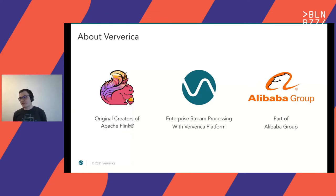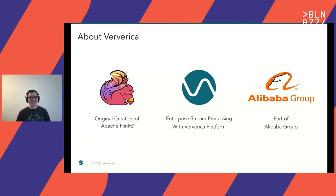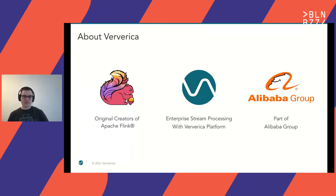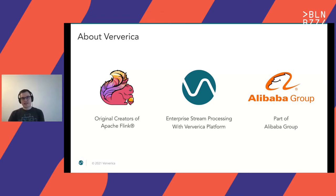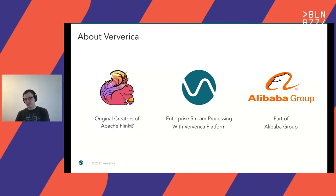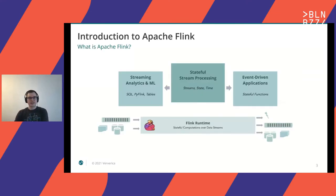It has evolved to a very large stream processing framework with many features. I've done this together with Ververica, a company that the creators of Apache Flink started to provide products around Apache Flink and professional services. This company was acquired in 2018 by Alibaba Group, one of the largest users and contributors to the Apache Flink project. We continue to work on the Flink project to add more features under the Alibaba umbrella.